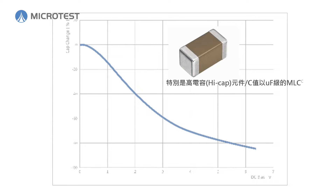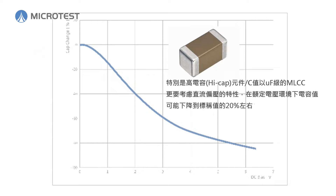Therefore, high dielectric Type II capacitors — X5R, X7R, and Y5V — have bias characteristics that cause a drop in capacitance due to a DC voltage.